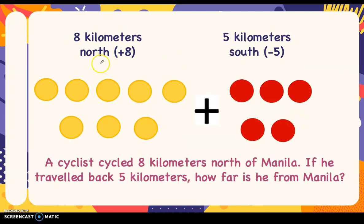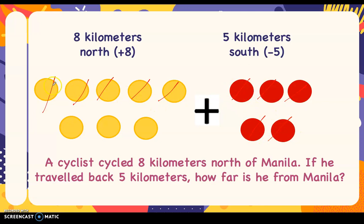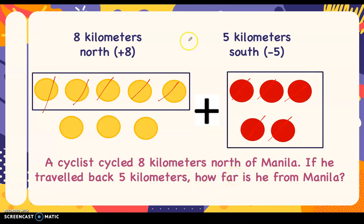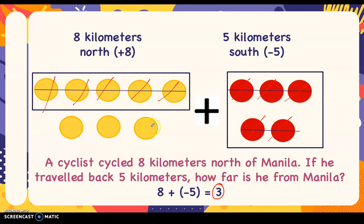We have eight kilometers north and five kilometers south. We remove all the zero pairs — one, two, three, four, five. And here, one, two, three, four, five — so we have five zero pairs. The remaining chips are three yellow or three positives. If the question is eight kilometers north and he traveled back five kilometers, how far is he from Manila? You cancel out the zero pairs and the answer is three — positive three.